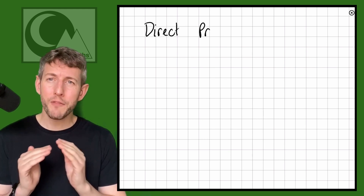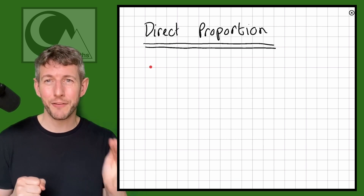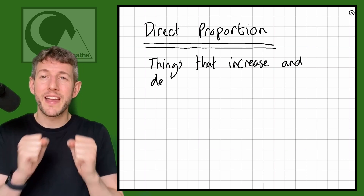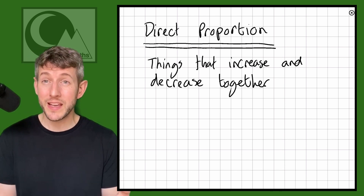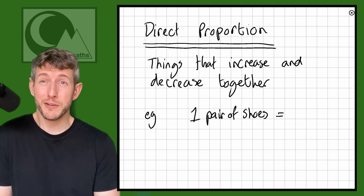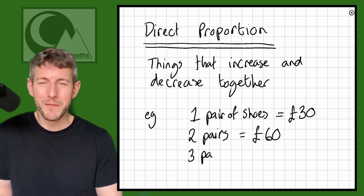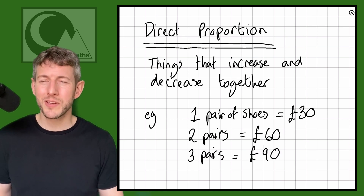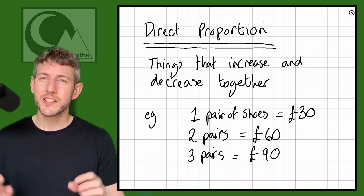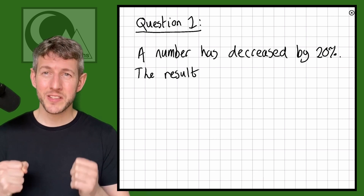For those of you that might have forgotten what direct proportion is — it's something I truly believe in, and I think it's one of the key things you need to master to get functional skills maths. Quite simply, it is the relationship between things that increase and decrease together. For example, if a pair of shoes costs £30, two pairs would be £60, three pairs would be £90, and so on. For every additional pair you buy, the price increases proportionally.